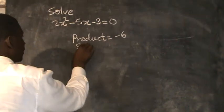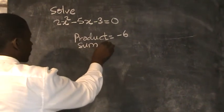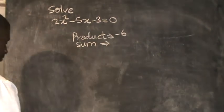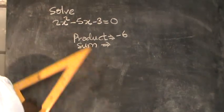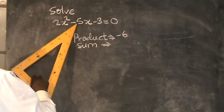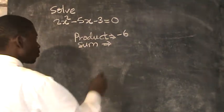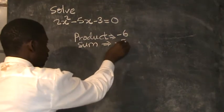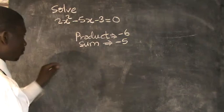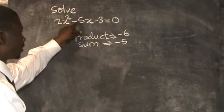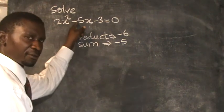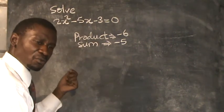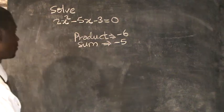The next thing is to raise the sum. The sum is the number in between, which is negative 5. So you have to consider negative 5. It's not always that the sum is going to be negative — in some questions, you find that the sum is going to be positive.